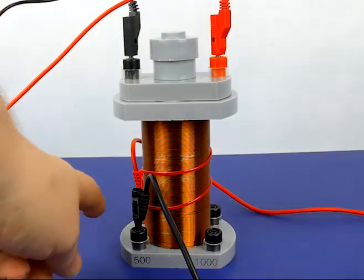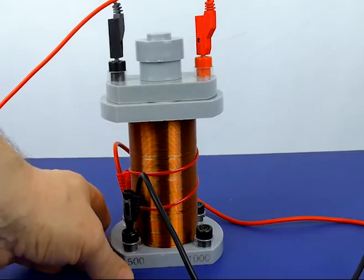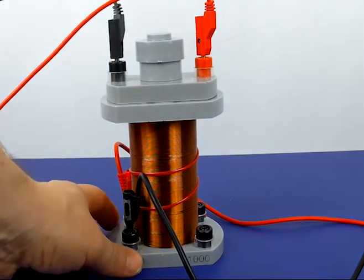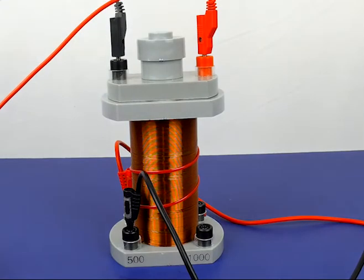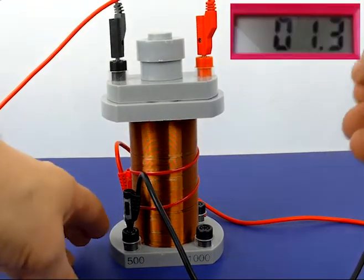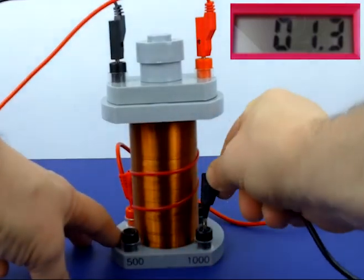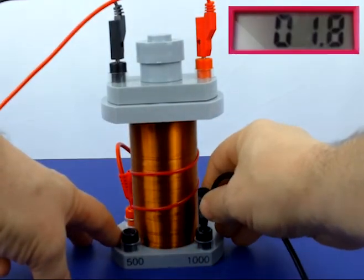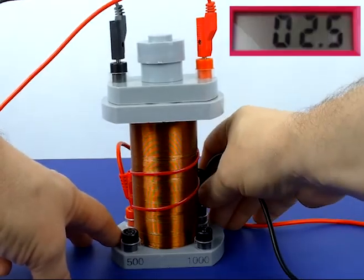I have the common connector on the red post, and I'm going to move this around to different coils. So this is 500 coils on the outer primary coil. This is 1,000, and this is 1,500.